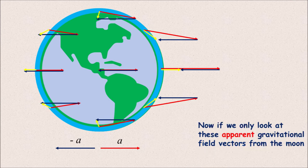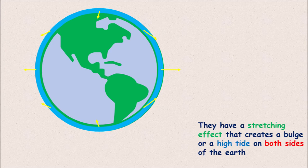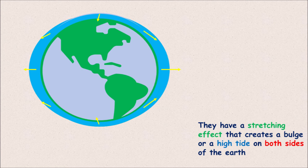Now if we only look at these apparent gravitational field vectors of the moon, they have the stretching effect that we were looking for. And they create a bulge or high tide on both sides of the earth.